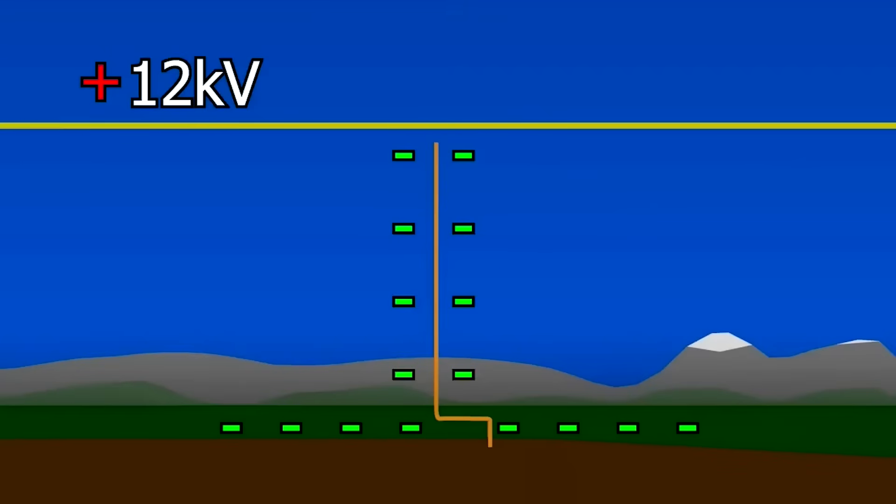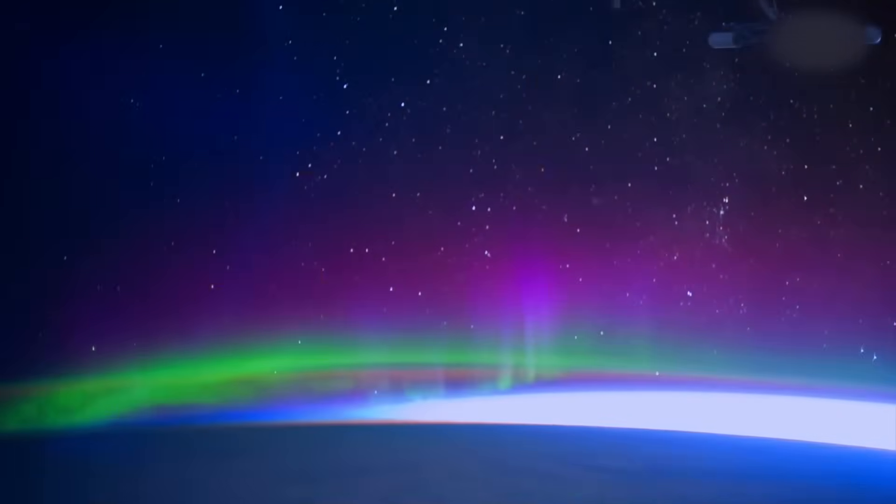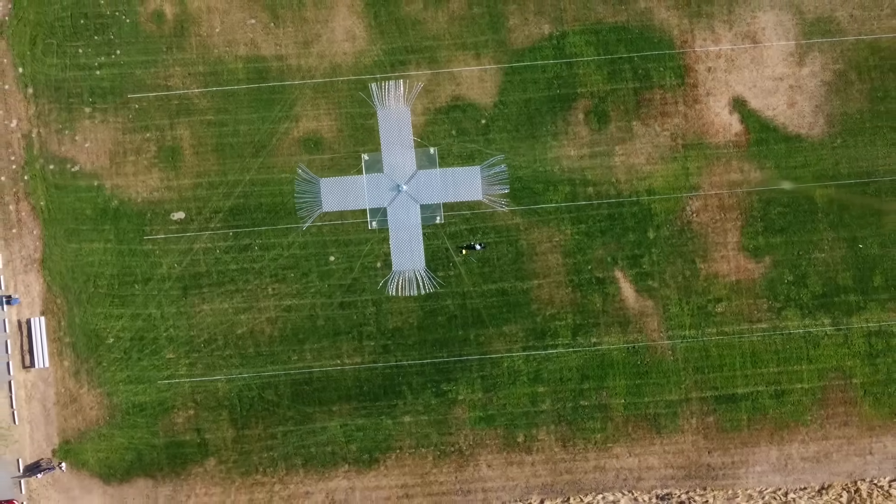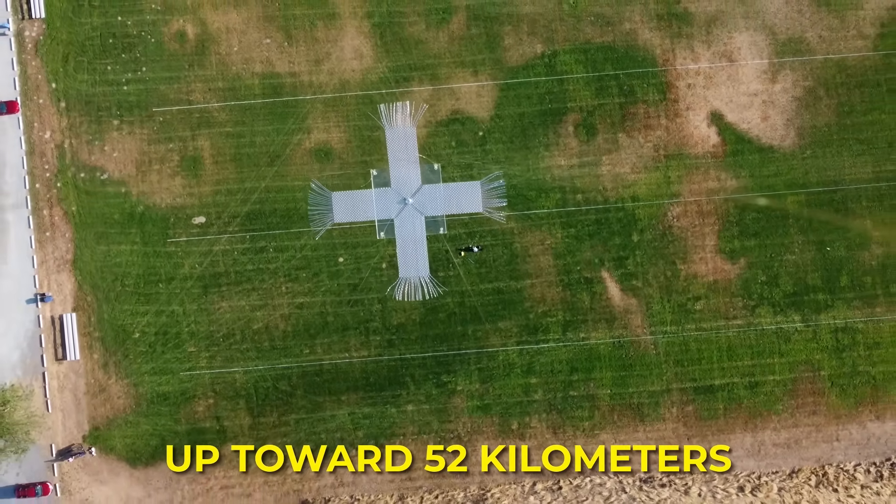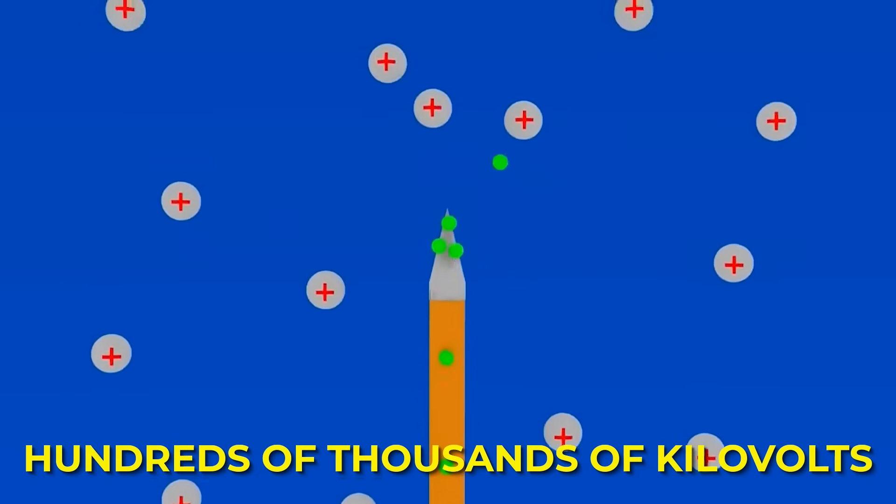Every meter someone moves upward adds roughly 100 volts of potential difference. The air may feel empty, but it is full. If a person rises far enough, up toward 52 kilometers, the potential difference reaches hundreds of thousands of kilovolts.